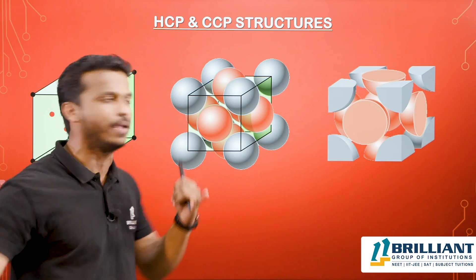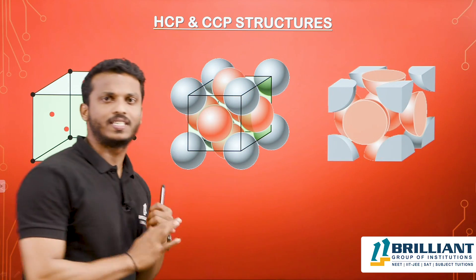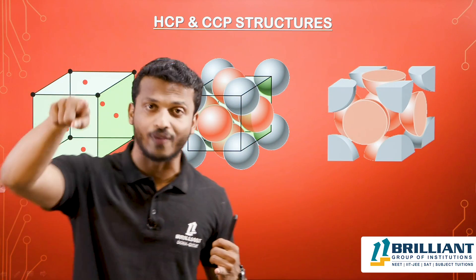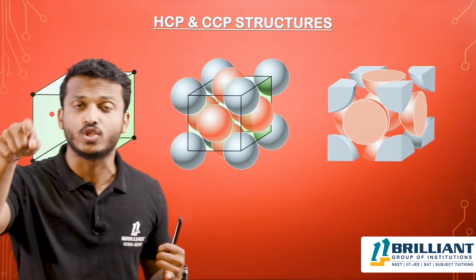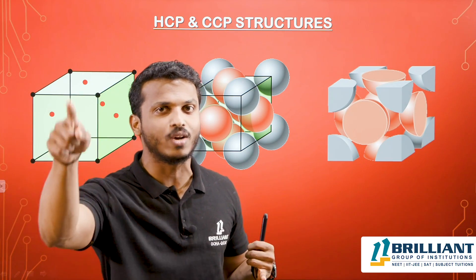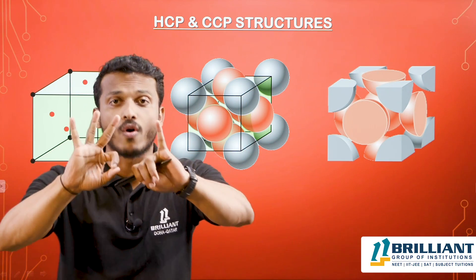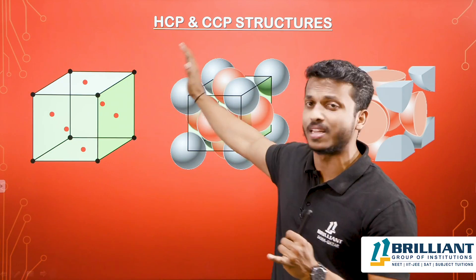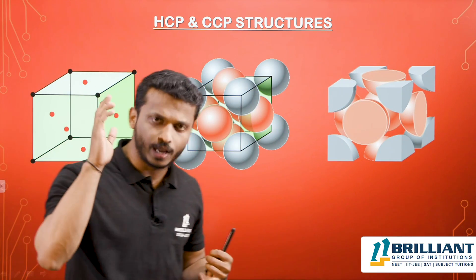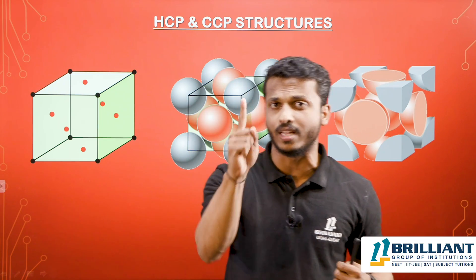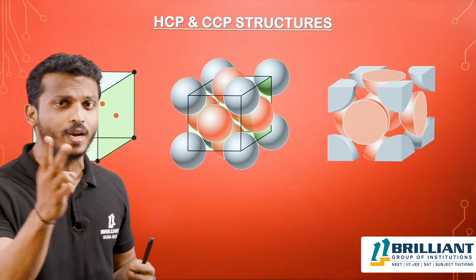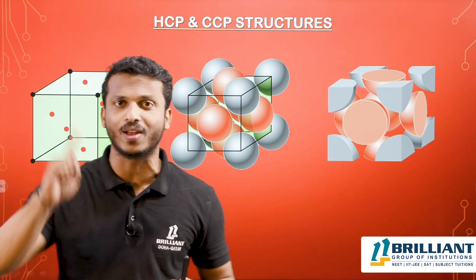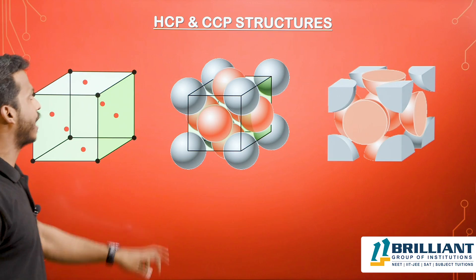For the face-placed spheres, from each face you get half a portion inside. There are six faces, so 6 × (1/2) = 3. Therefore, 1 + 3 = 4 total spheres in the FCC unit cell. To recap: simple cubic has 1 sphere, BCC has 2 spheres, and FCC/HCP/CCP has 4 spheres in the unit cell.